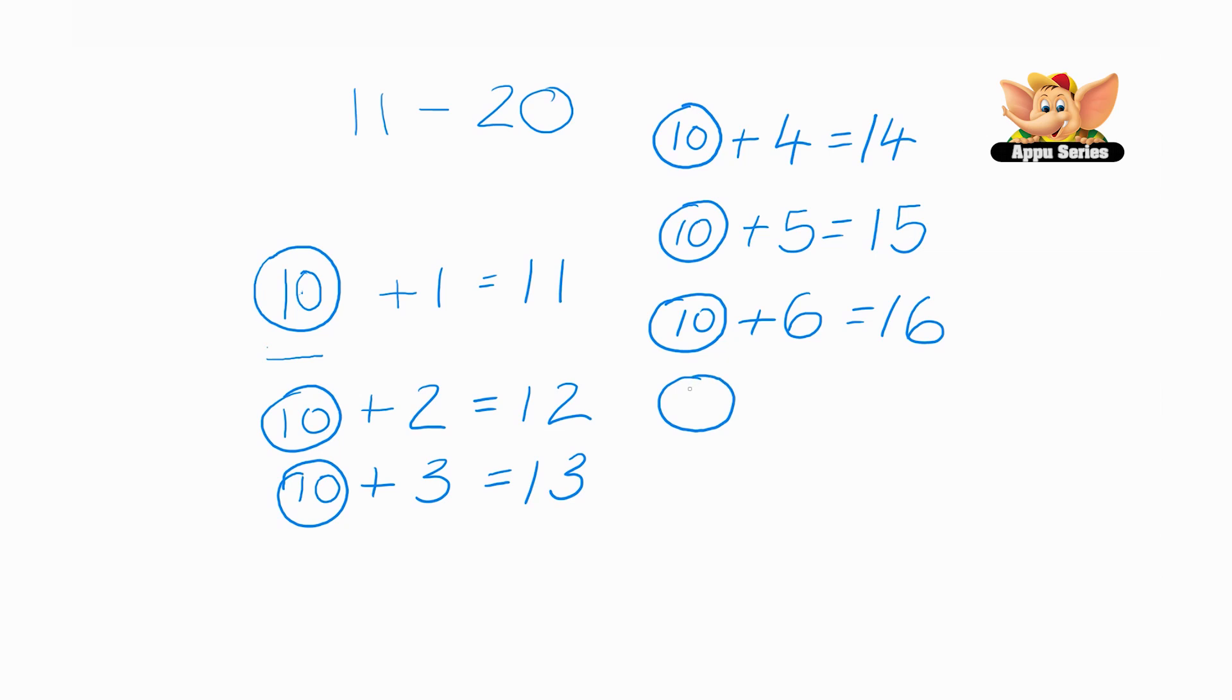And the next one, 10 plus 7 more candies, getting a lot of candies here, that's 17. Another circle, 10, plus 8 more candies equals 18. Simple so far, 2 more to go.